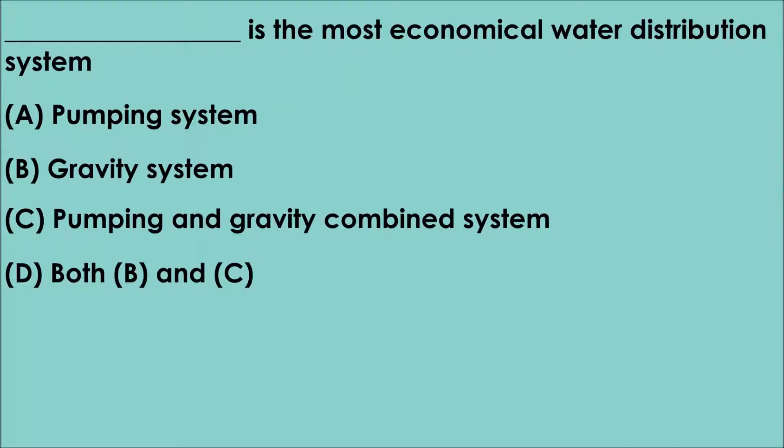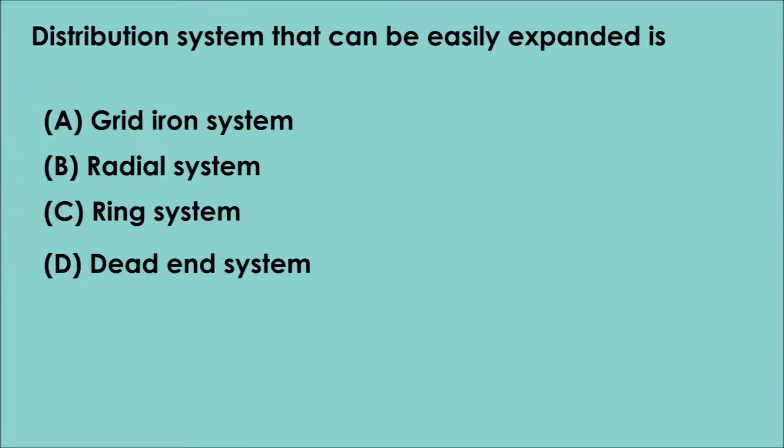Question 1. Fill in the blank: _____ is the most economical water distribution system. A. Pumping system. B. Gravity system. C. Pumping and gravity combined system. D. Both option B and C. The correct answer is option B. Gravity system is the most economical water distribution system.